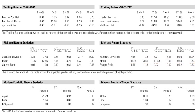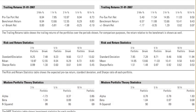Next up are the modern portfolio theory statistics: alpha, beta, and r-squared. The r-squared score for a portfolio should be at least 80 to indicate that the alpha and beta scores are reliable. Alpha reveals the value of a portfolio's returns given its beta score. Any positive alpha means that the fund's returns outstrip the risk that were taken to earn those returns.